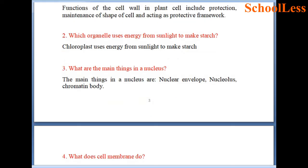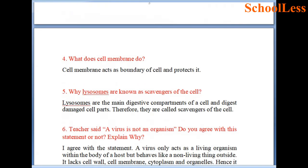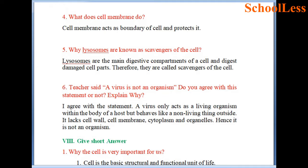Question 3: What are the main things in a nucleus? There are three main things in the nucleus: nuclear envelope, nucleolus and chromatin body. Question 4: Cell membrane acts as the boundary of the cell and protects it — present in both plants and animals. Question 5: Lysosomes are the main digestive compartments of a cell and digest damaged cell parts, therefore they are called scavengers of the cell.